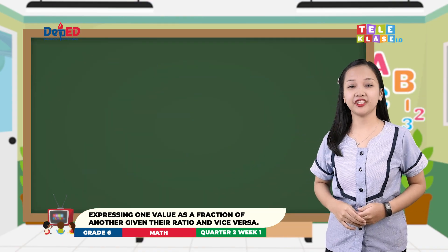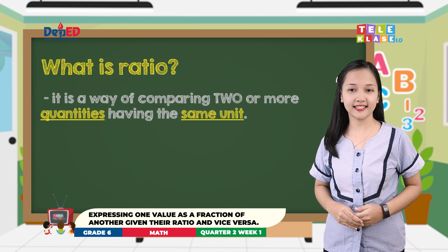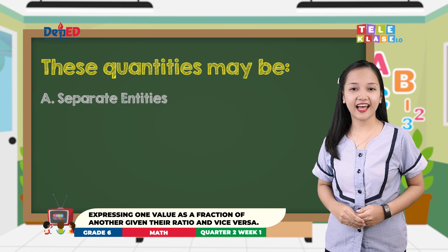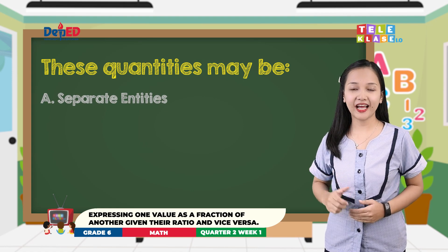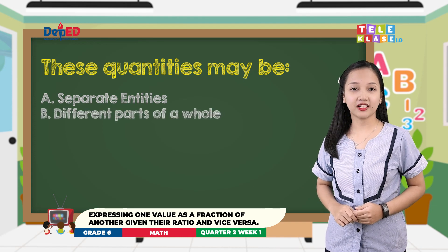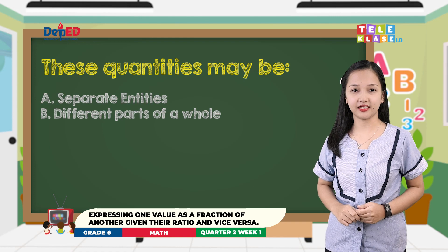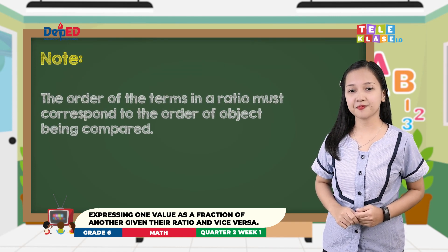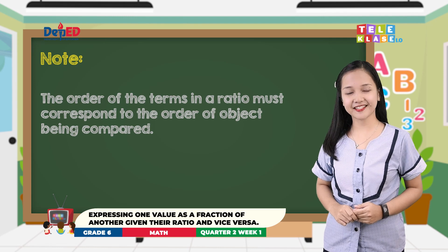Now, let us begin by defining ratio. Ratio is a way of comparing two or more quantities having the same unit. These quantities may be separate entities — we are comparing two things like boy and girl, pen and pencil — or different parts of a whole. For example, comparing the number of boys and number of girls in the same section or in the same family. Note: the order of the terms in the ratio must correspond to the order of the objects being compared. To better understand this statement, here is an example.